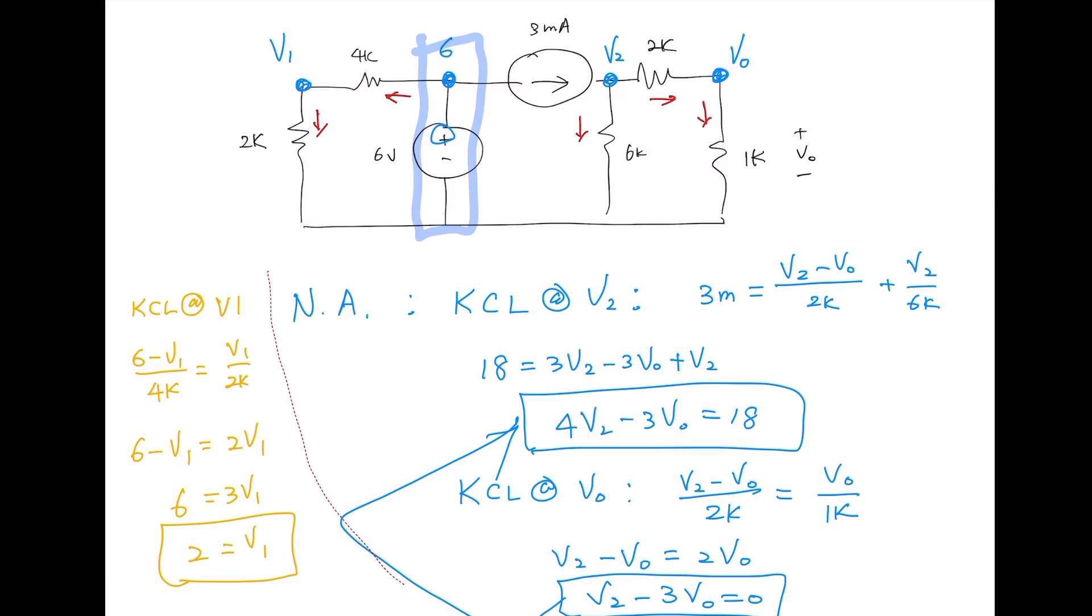To find the current going through 4K and 2K, we do 6V over 6K which is 1mA and this is 1mA. So that's 4V right here and 2V right here.